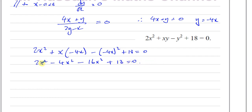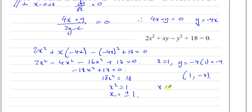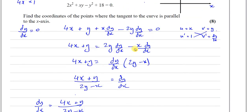Collecting terms: 2x squared minus 4x squared is minus 2x squared, then minus 16x squared gives minus 18x squared plus 18 equals zero. So 18x squared equals 18, meaning x squared equals 1, so x equals plus or minus 1. When x equals 1, y equals negative 4 times 1 equals negative 4, giving the point (1, −4). When x equals negative 1, y equals negative 4 times negative 1 equals 4, giving the point (−1, 4).